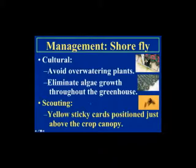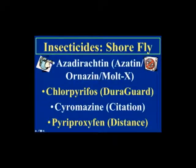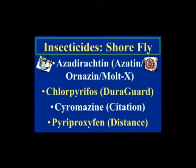Shore fly management: avoid overwatering and avoid algae growth, since shore flies love algae. Position yellow sticky cards above the crop canopy — unlike fungus gnats, shore flies are much better flyers and will be caught above the canopy, about an inch or two above. Some insecticides are registered for shore fly larvae — azadirachtin, cyromazine, and pyriproxyfen are insect growth regulators; Duraguard is a contact. For adults, high-volume applications or autofoggers are needed because adults can escape ahead of spray due to the air barrier created by the spray.